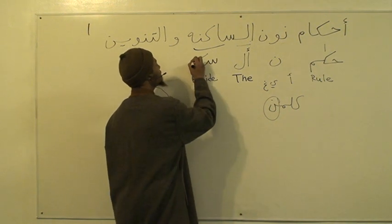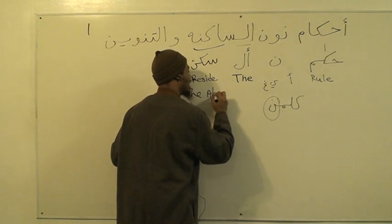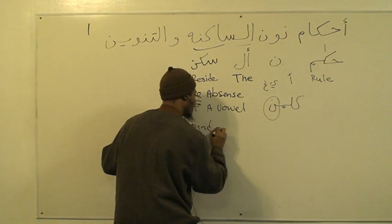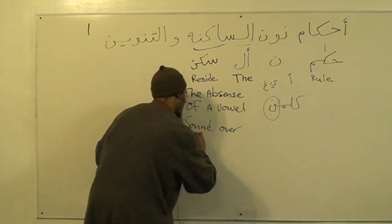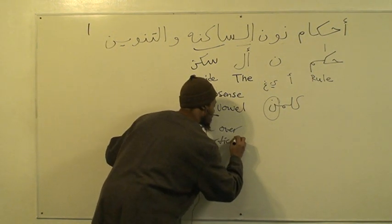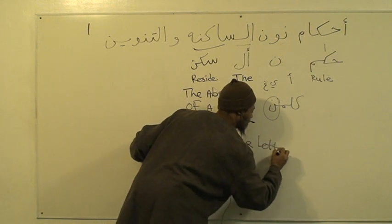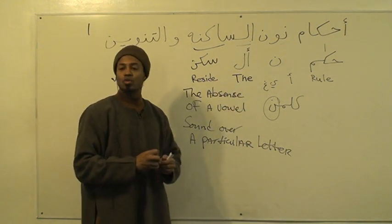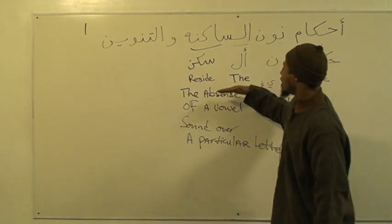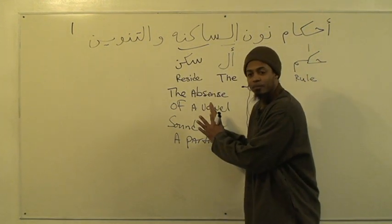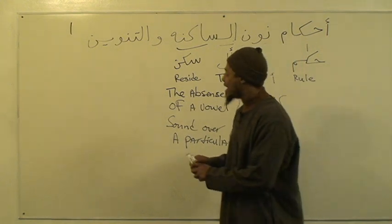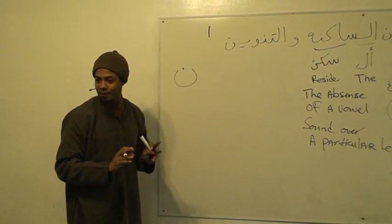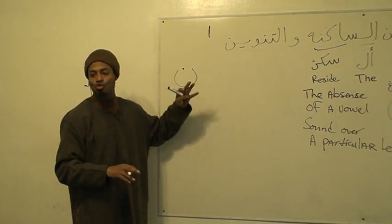As a terminology, sakinah means the absence of a vowel sound over or with regards to a particular letter. So when we're talking about noon as-sakinah, we're talking about the noon that has no vowel sound over it — no vowel sound, no movement. It's not saying na, ni, nu. It's not saying anything.